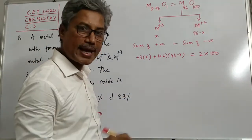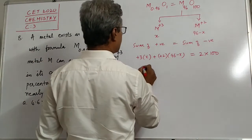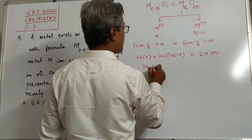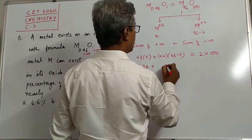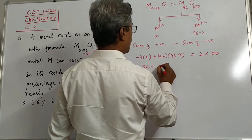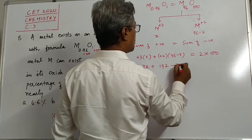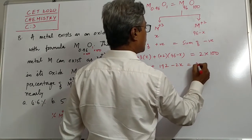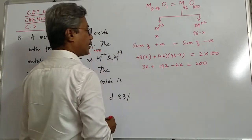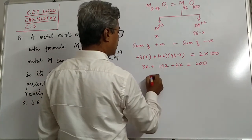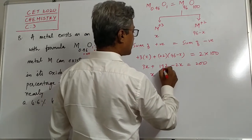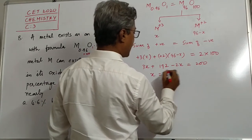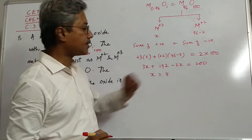Then you solve this equation for X. How much it will be? This is 3X plus 96 into 2. This is 192 minus 2X. This will be 200. Now see the rules. 3X minus 2X, it will be X. This must be equal to 200 minus 192. It will be 8. That means X is 8.